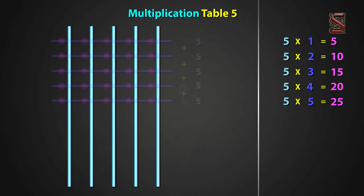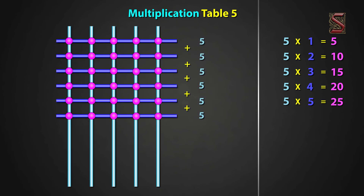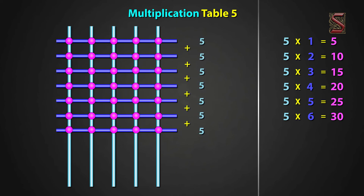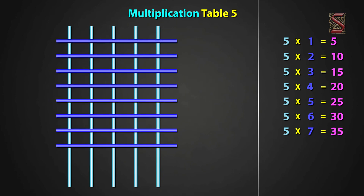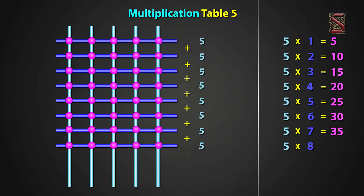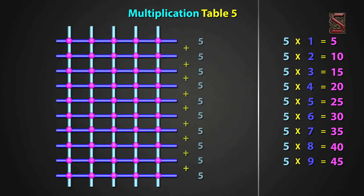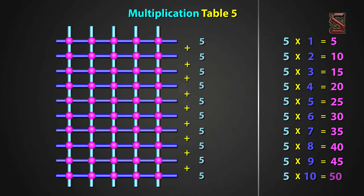5 six times, draw 6 sleeping lines. We have 30 meeting points. Now, 5 six times equal to 30. 5 seven times, draw 7 sleeping lines. We have 35 meeting points. So, 5 seven times equal to 35. 5 eight times, draw 8 sleeping lines. We have 40 meeting points. So, 5 eight times equal to 40. 5 nine times, draw 9 sleeping lines. We have 45 meeting points. Now, 5 nine times equal to 45. 5 ten times, draw 10 sleeping lines. We have 50 meeting points. Now, 5 ten times equal to 50.